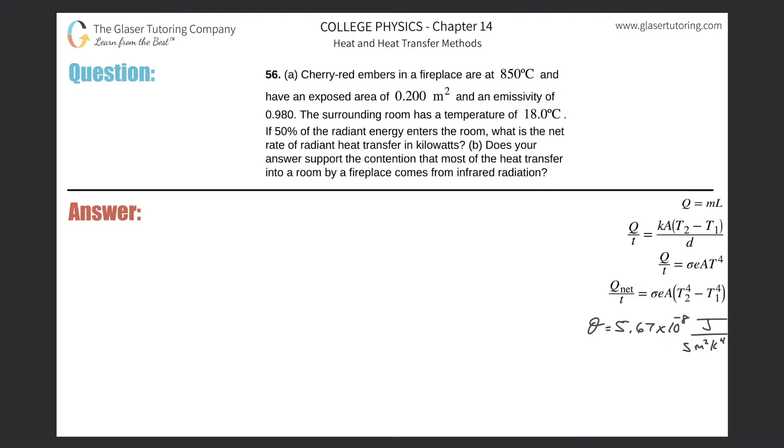Number 56, letter A. Cherry red embers in a fireplace are at 850 degrees Celsius and have an exposed area of 0.2 meters squared and an emissivity of 0.98. The surrounding room has a temperature of 18 degrees Celsius. If 50% of the radiant energy enters the room, what is the net rate of radiant heat transfer in kilowatts?